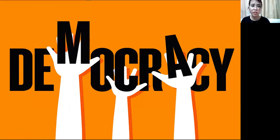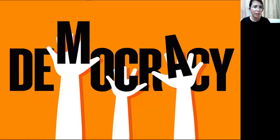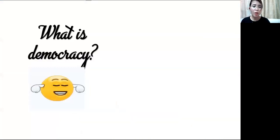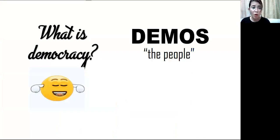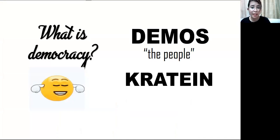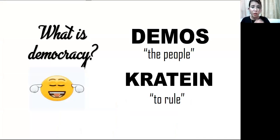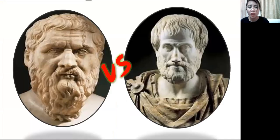Now, regarding democratic intervention, let's talk about what democracy is. What do you remember about democracy as one of the forms of government from your Political Science subject? Commonly, when we talk about democracy, it's about freedom — that's what a normal citizen would think. But what does democracy really mean? Democracy came from two Greek words: 'demos,' which means 'the people,' and 'kratos,' which means 'to rule.' Combined, democracy literally means rule by the people.